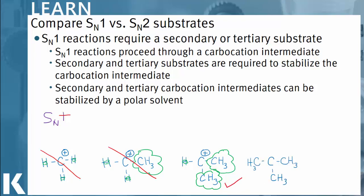Finally, our tertiary carbon is called tertiary because there are three carbon atoms and our middle carbon has a positive charge. Tertiary carbons have the best stability — there are three electron clouds able to support our carbocation in the middle. Remember, electrons are negatively charged and like to be attracted to positive charges, so the carbocation will be well stabilized by three additional electron-donating methyl groups.